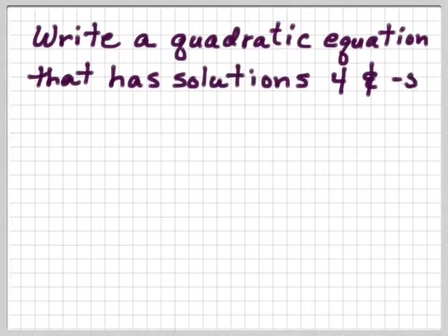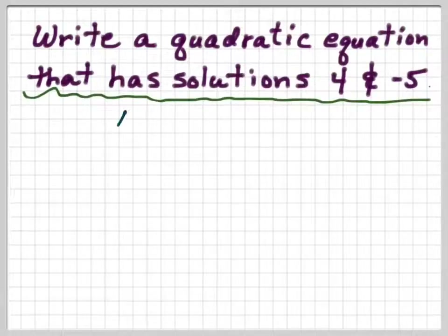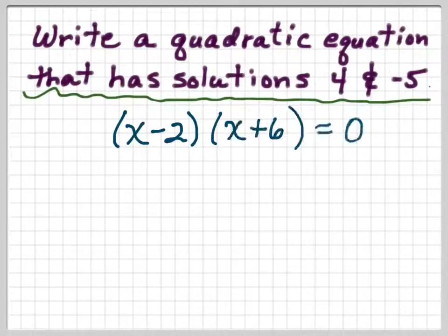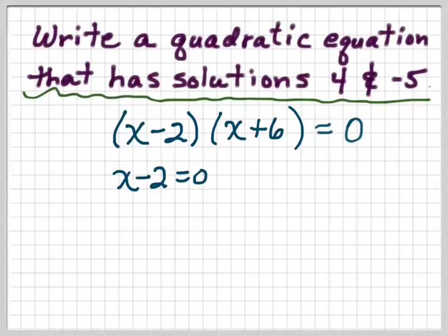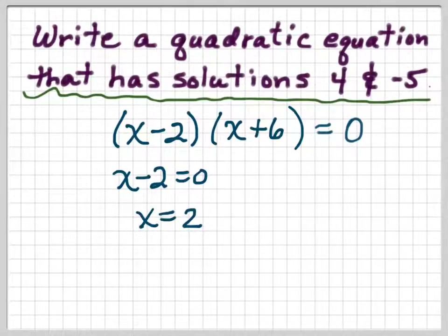Write a quadratic equation that has solutions of 4 and negative 5. But first, let's work one forward with a different set of numbers. If I gave you x minus 2 times x plus 6 equals 0, how would you solve that? You would say either x minus 2 equals 0 — then you add 2 to both sides and get x equals 2.